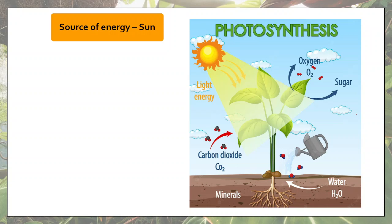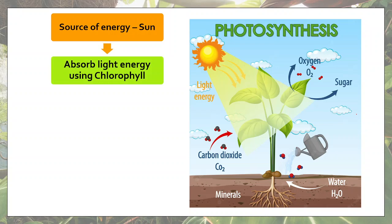How do plants trap this light energy? They trap it using a green pigment present in their leaves called chlorophyll. Chlorophyll is present in the chloroplasts, which are special cell organelles present in the leaves of plants. It is chlorophyll that traps this light energy. There are also different pigments — red, green, and yellow — all responsible for absorbing light energy, but because most plants have abundant chlorophyll, they appear green in color.